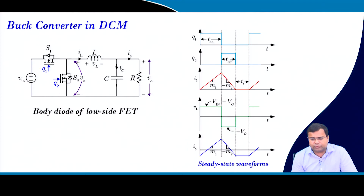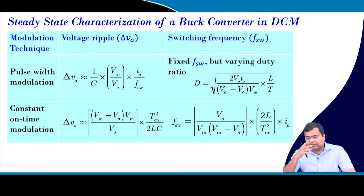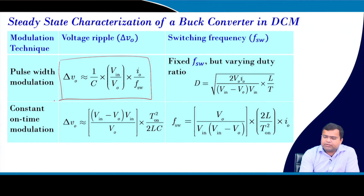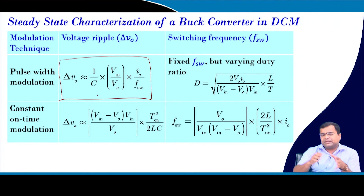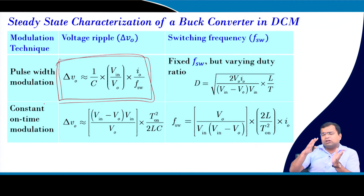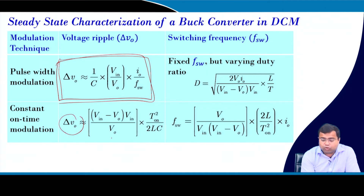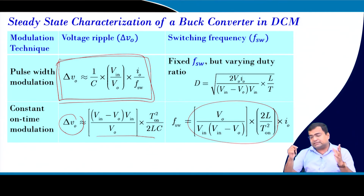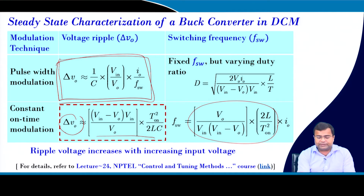In discontinuous conduction mode under PWM, as load current decreases the ripple is slightly reduced. As long as it is within the accepted limit, no additional feature is needed — we only need to maintain the output voltage ripple within specification. Under constant on-time, output voltage ripple is largely insensitive to load, but switching frequency reduces linearly with load current. For input voltage variations, current-based constant on-time control is needed, as discussed in lecture 24.